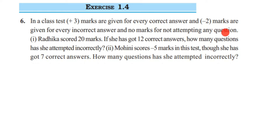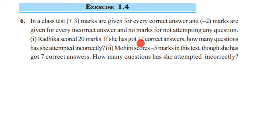The first one is: Radhika scored 20 marks, and if she got 12 correct answers, how many questions has she attempted incorrectly? So let's solve the first question. Radhika has scored 20 marks total — that is, after adding both correct and incorrect marks she got 20 marks — and she has attempted 12 correct answers. We have to find how many incorrect answers she attempted.